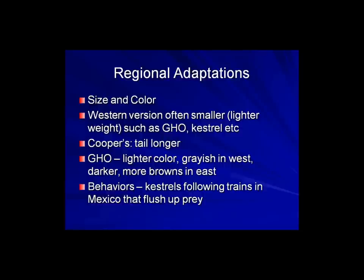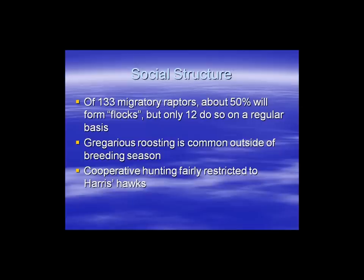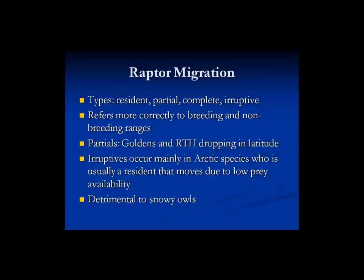There are also regional adaptations — particularly in size and color. Great horned owls out west are typically smaller and lighter in color than eastern ones. Cooper's hawk tails are longer, perhaps for more maneuverability. Kestrels in Mexico have learned to follow trains because they flush up prey — insects, mammals, and possibly birds. Most raptors are not particularly social, though 12 species flock regularly, there is some communal roosting, and Harris's hawks hunt cooperatively. During migration, broad-winged hawks form huge kettles with thousands of birds.